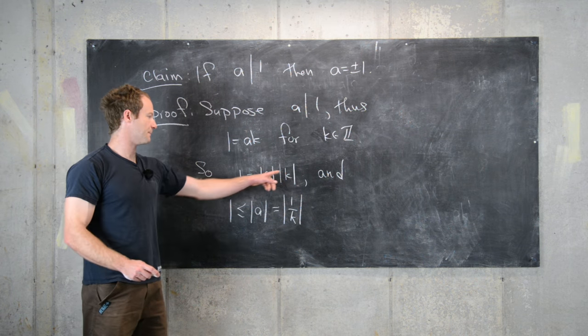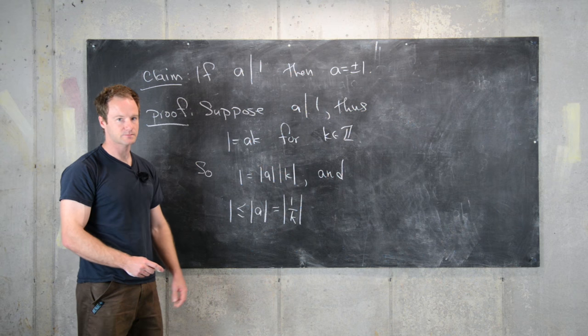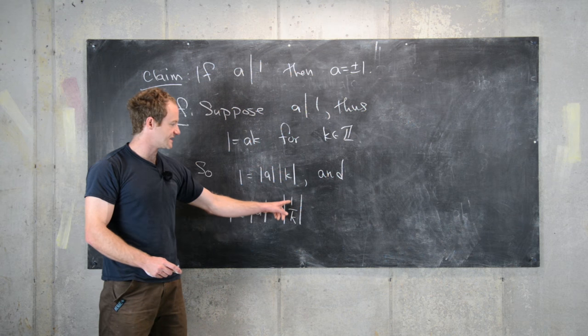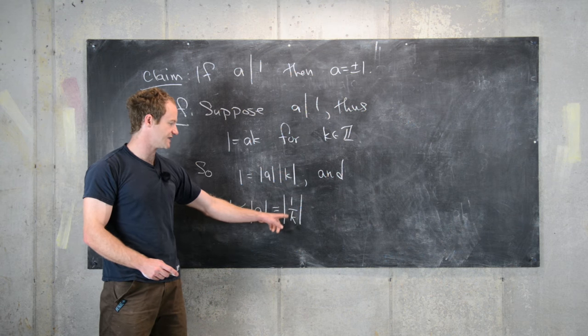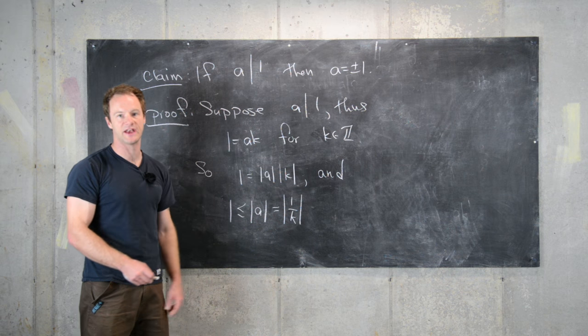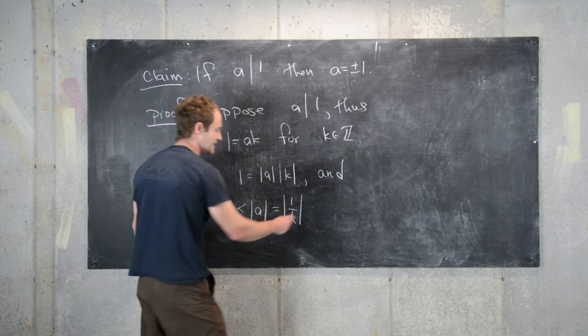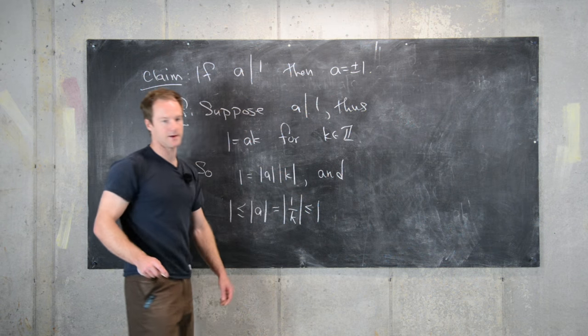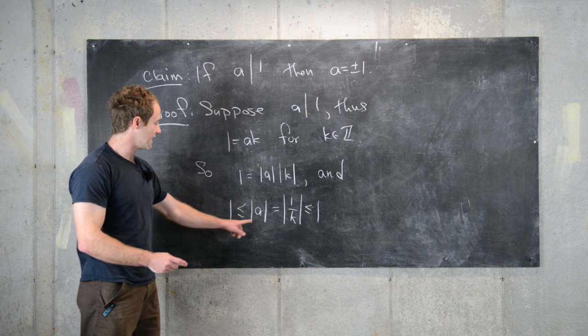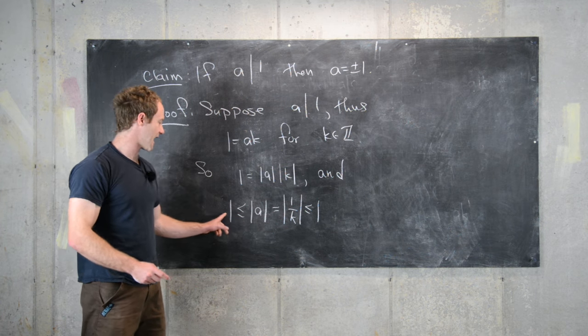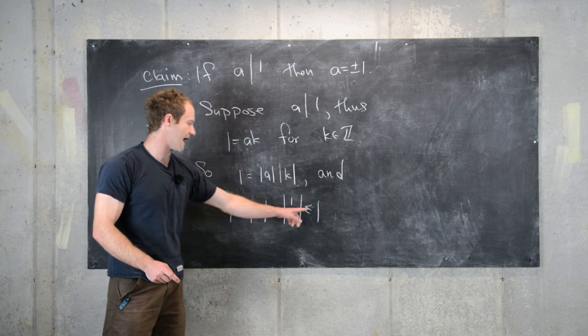Just by this equation. And then finally since this is the reciprocal of an integer, in absolute value this is the reciprocal of a natural number, so that means this is less than or equal to 1. So we end up with this sandwich: the absolute value of a is greater than or equal to 1 and it's less than or equal to 1.